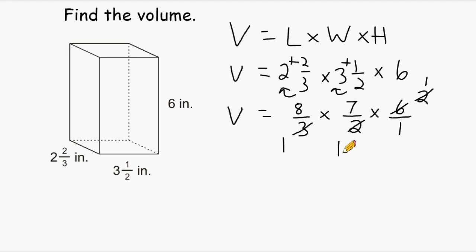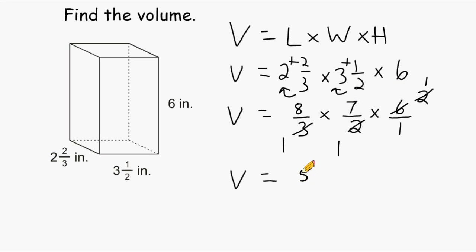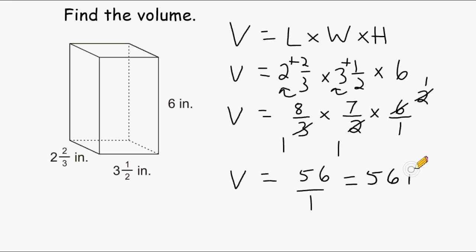Now that we have cancelled everything possible, we multiply our remaining numerators together to get our numerator and our remaining denominators to get our denominator. On the top we have an eight and a seven: eight times seven is fifty-six, and fifty-six times one is also fifty-six. So the numerator is fifty-six. For the denominator we have one times one times one, which is one. And anything divided by one is itself. So the volume of the shown rectangular prism is fifty-six cubic inches.